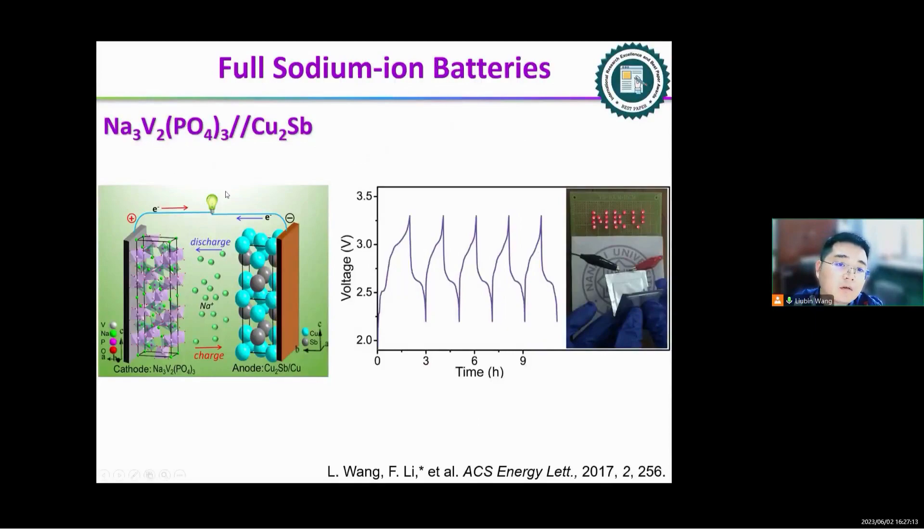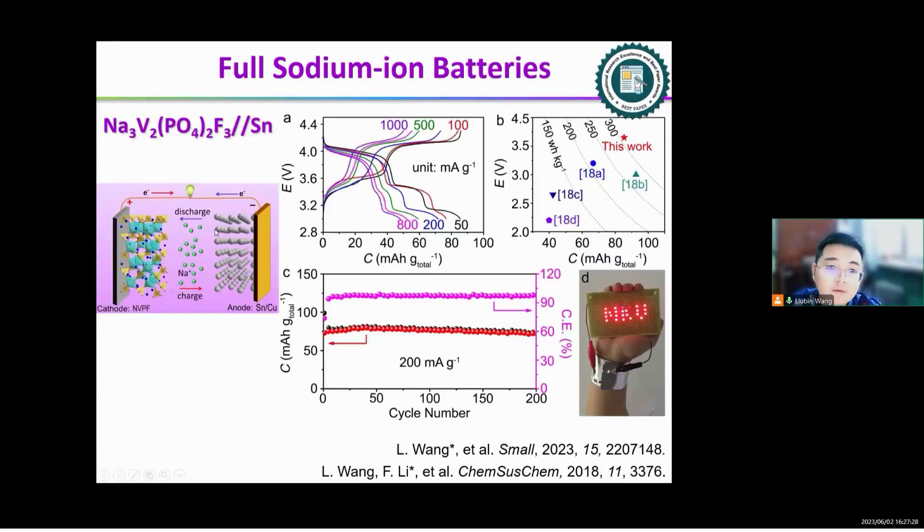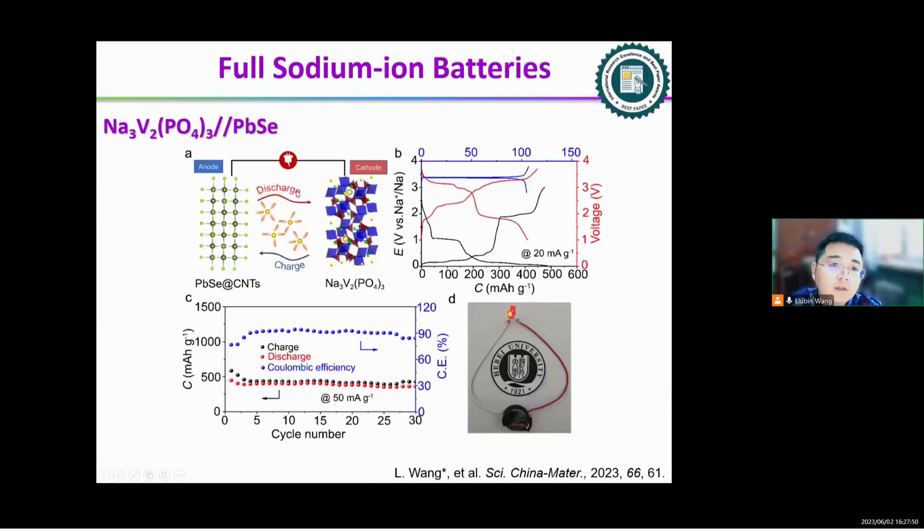Another full cell is using NVP as cathode and copper-tin as anode. Due to the integrated structure, the pouch cell shows good flexibility. This is also another full sodium ion battery. We use NVP as cathode, tin as anode. It can show a high energy density full battery. It can power an NKU logo LED. This is another full sodium ion battery. It also shows a good electrochemical performance.